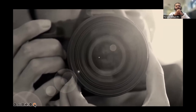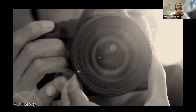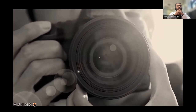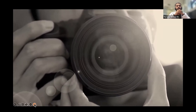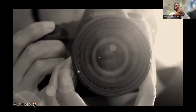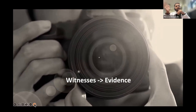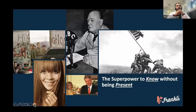In the 1800s, when photography was invented, it wasn't just a new technology. It was a superpower because it converted eyewitnesses to actual evidence. It gave us the ability to know that a certain thing had occurred without being present there — arguably the first time we could actually say that as a fact.